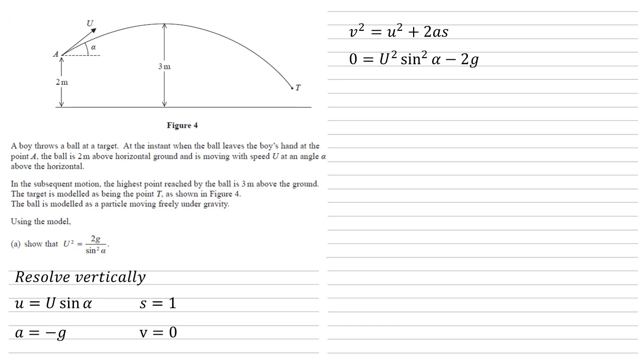Putting our values in, we get that 0 equals U squared sine squared alpha minus 2G. So U squared sine squared alpha equals 2G. Dividing the sine squared alpha gives us U squared equals 2G over sine squared alpha as required.